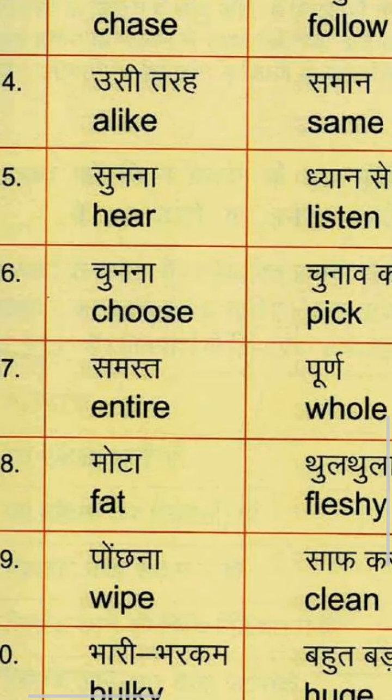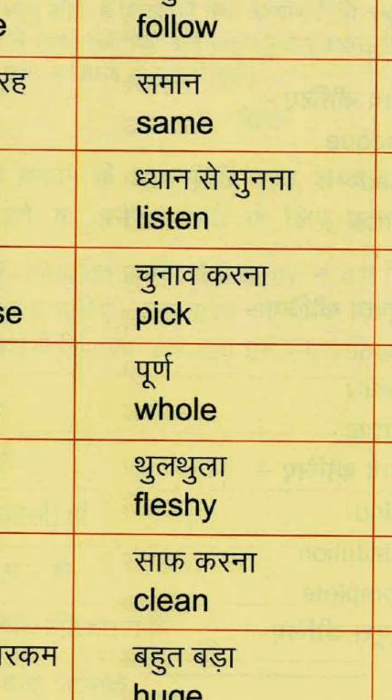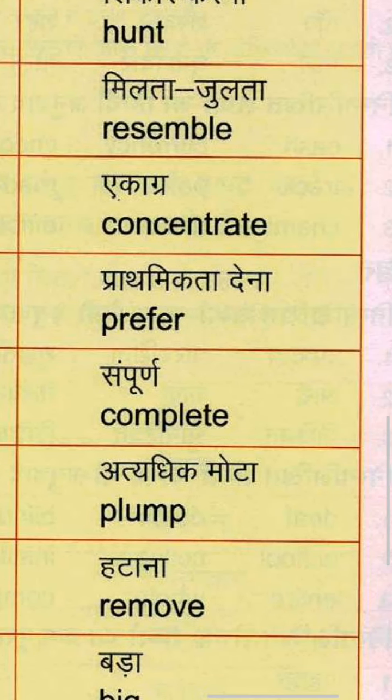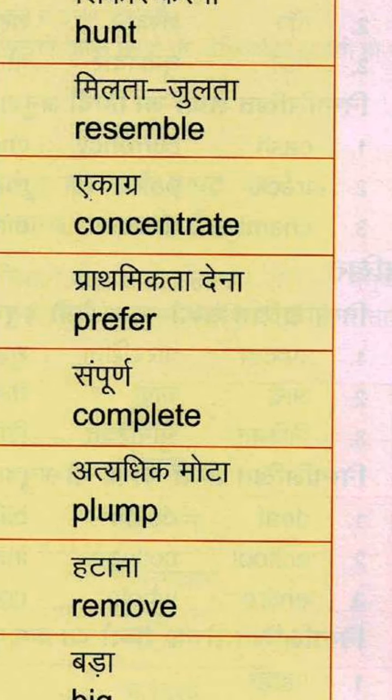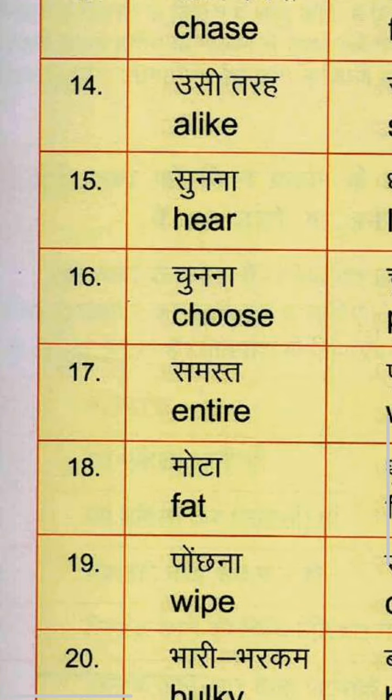Fourteenth group: Usi tarah means Alike — A-L-I-K-E. Samaan means Same — S-A-M-E. And Milta-julta means Resemble — R-E-S-E-M-B-L-E.